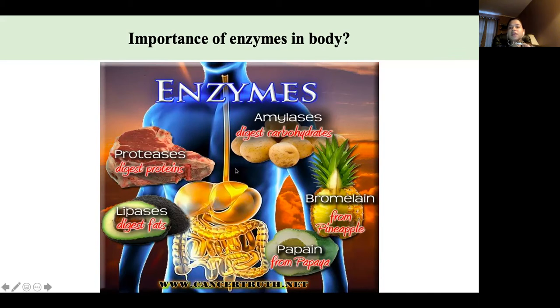Enzymes come in different types. We have protease class of enzymes, which are important for digesting proteins, which is what we'll be working with today. We'll be working with papain and bromelain, which are obtained from papaya and pineapple respectively, protease enzymes that digest proteins.